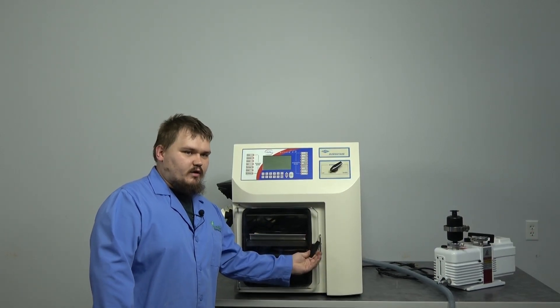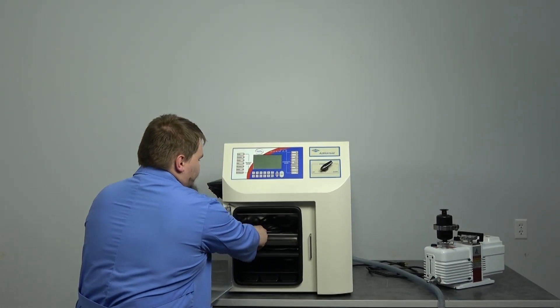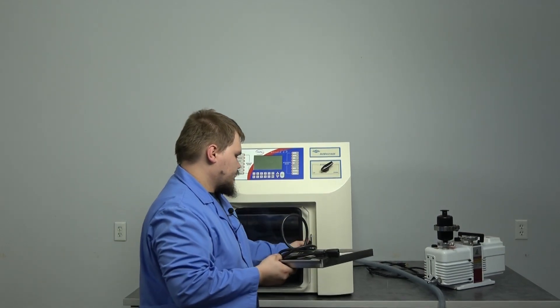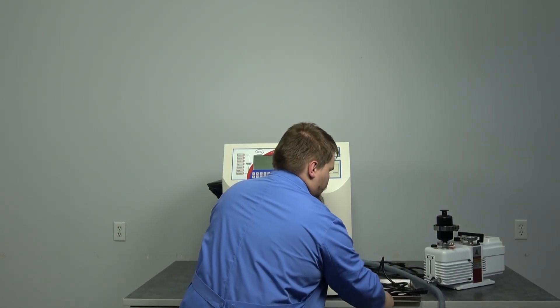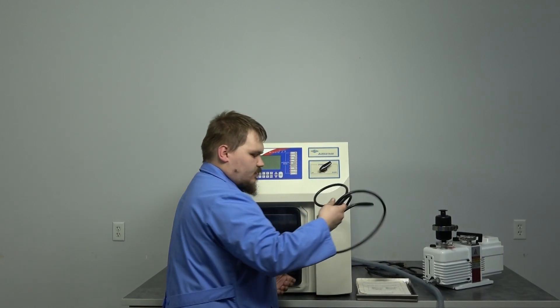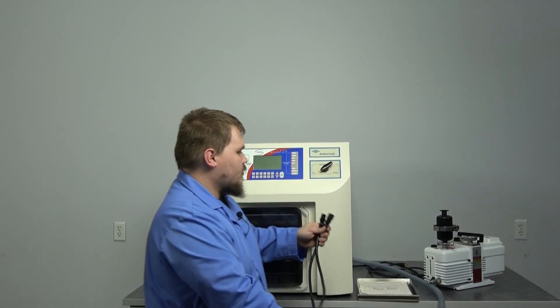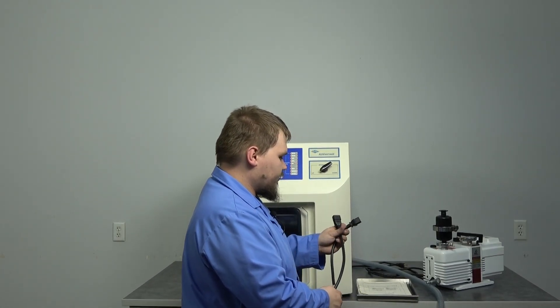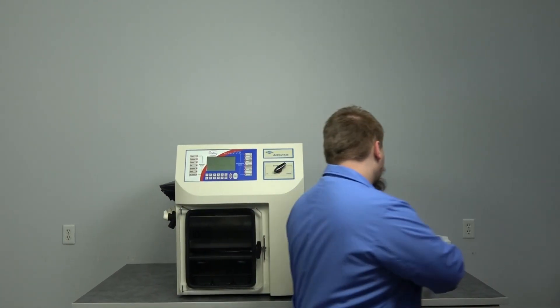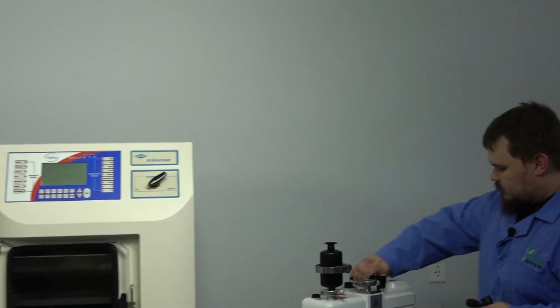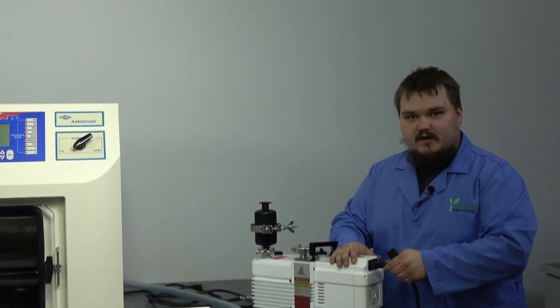First things first, we're going to pull out the items in the machine, and that's the power cord for the vacuum pump right here. We're going to put the cord on the vacuum pump, which connects up right here.